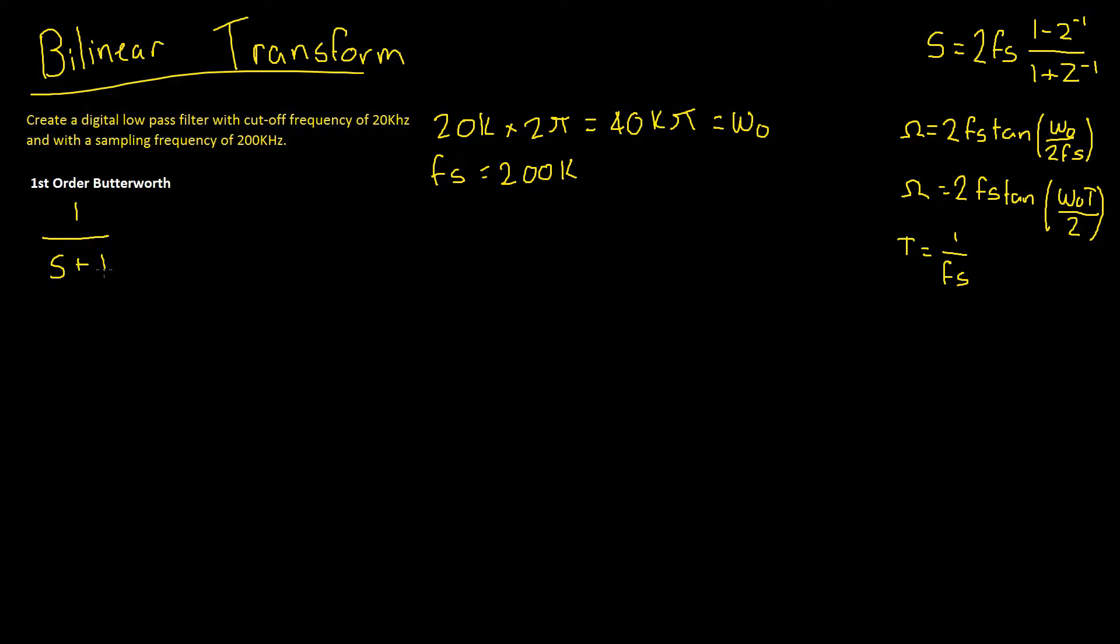And if required, we'll go over an example of that in a future video. For now, let's continue. If we were to transform a low-pass filter into another low-pass filter, we would make the transformation S is equal to S divided by our new omega 0, our new cut-off frequency. However, as we need to perform our pre-warping on our signal, instead of dividing by our new omega 0, we divide by capital omega.